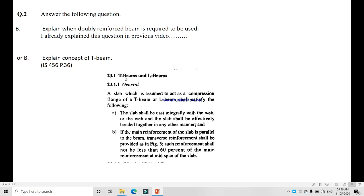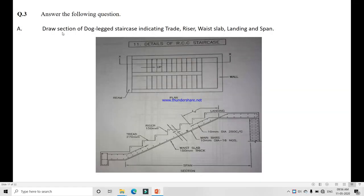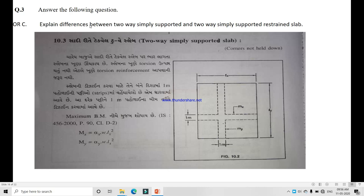This is a few things about T-beam and RBM section. Question 3A: Draw section of dog-leg staircase indicating straight riser, waist slab, landing and span. This is RCC staircase going upwards and you can reach through landing. This is the waist slab, this is the distance, this is tread, this is spread, and this is rise. This is the reinforcement detail.